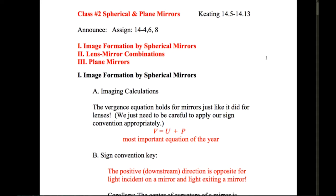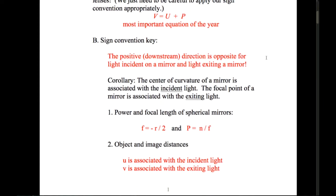The sign convention we introduced last class is that the positive downstream direction is opposite for the incident light and the light exiting the mirror. The light reflects off the mirror, which you presumably already knew, but the downstream direction changes when that reflection happens. So upstream and downstream have a certain direction for incoming light and are reversed for exiting light. Downstream always means the way the light is flowing.